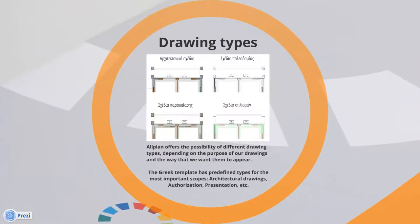Allplan offers the possibility of different drawing types depending on the purpose of our drawing and the way we want them to appear. The Greek template has predefined types for the most important scopes: architectural drawings, authorization, presentation, etc.